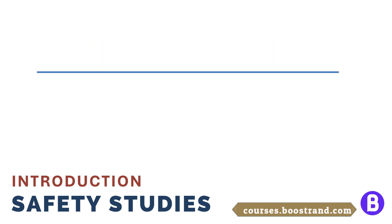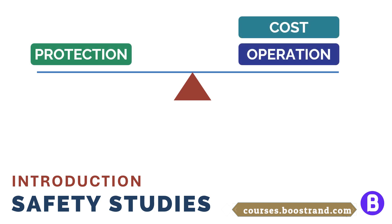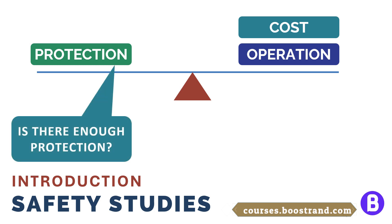That's why the process engineer should always try to optimize and balance plant safety, cost, and operability. However, it's always important to ensure that all upset scenarios where we are afraid of an accident or some kind of damage to equipment are well addressed and that the plant has enough protection.